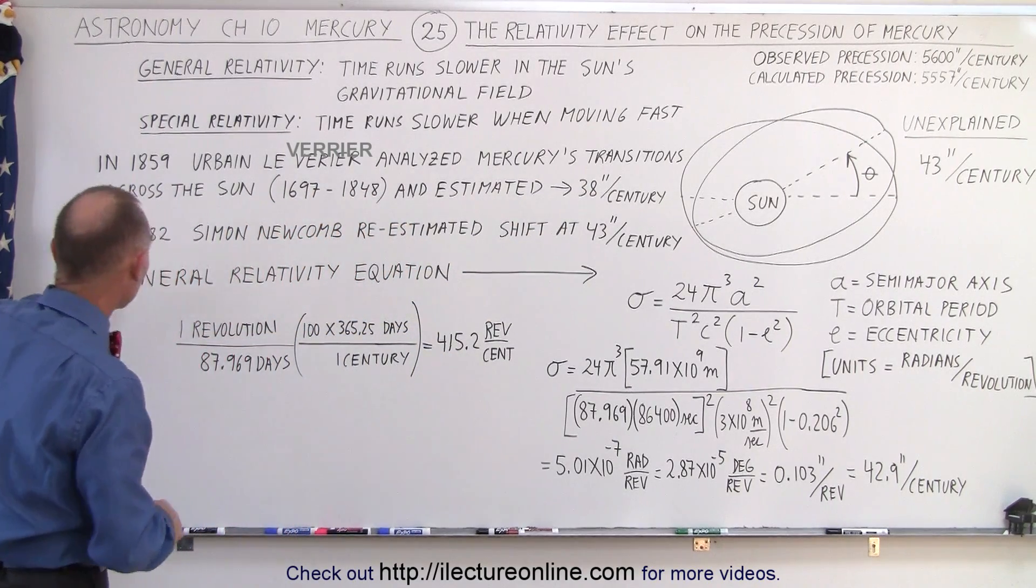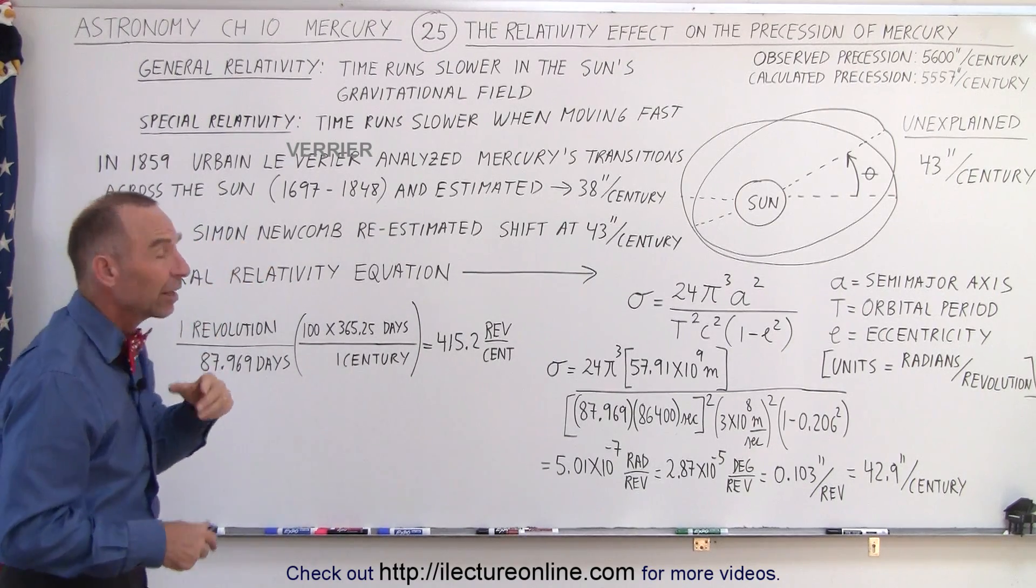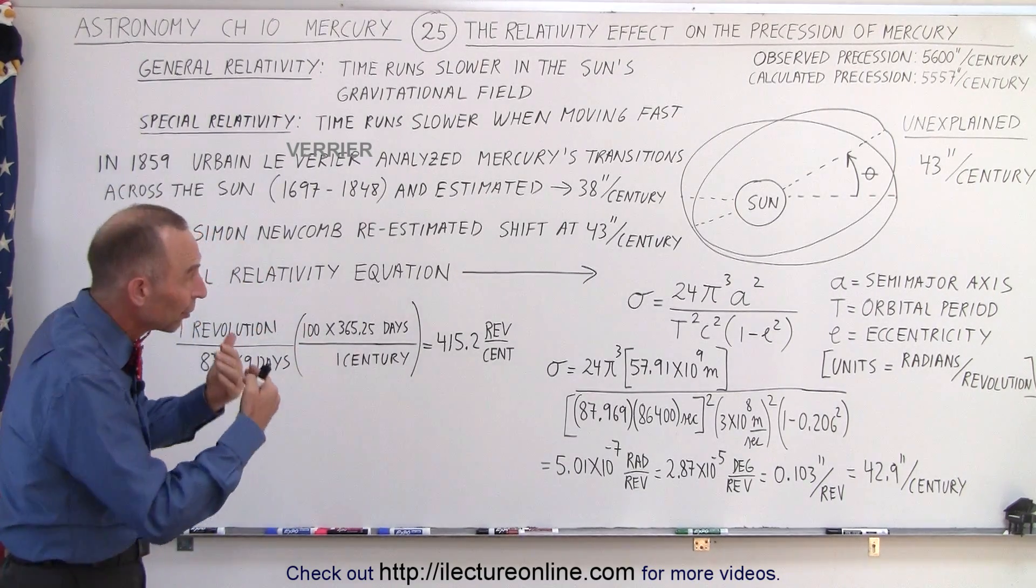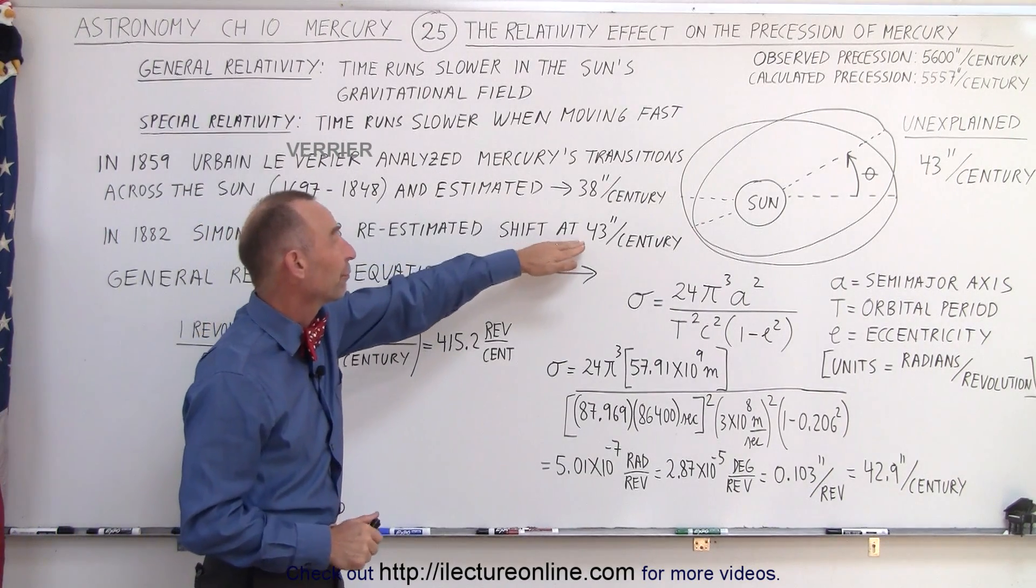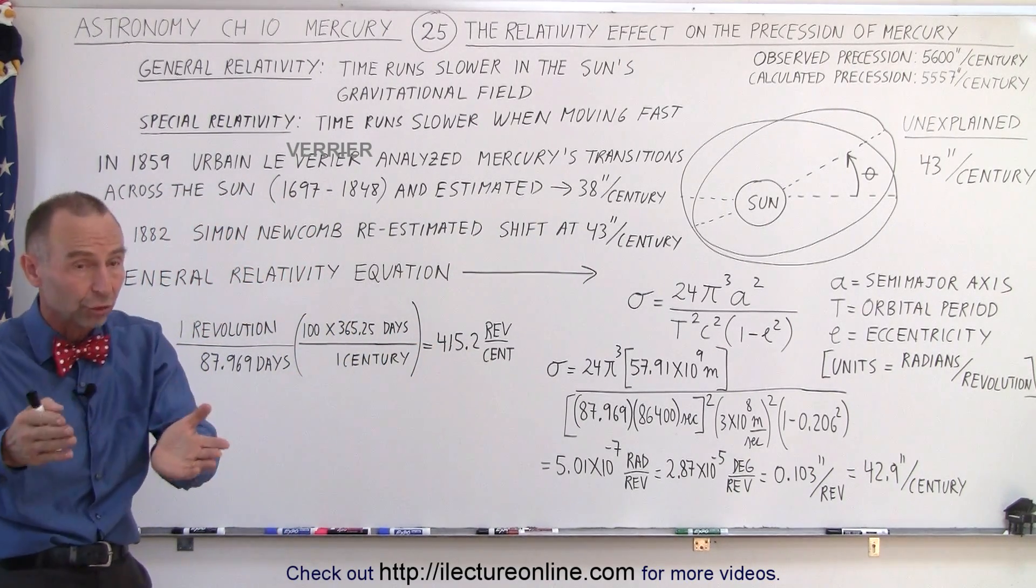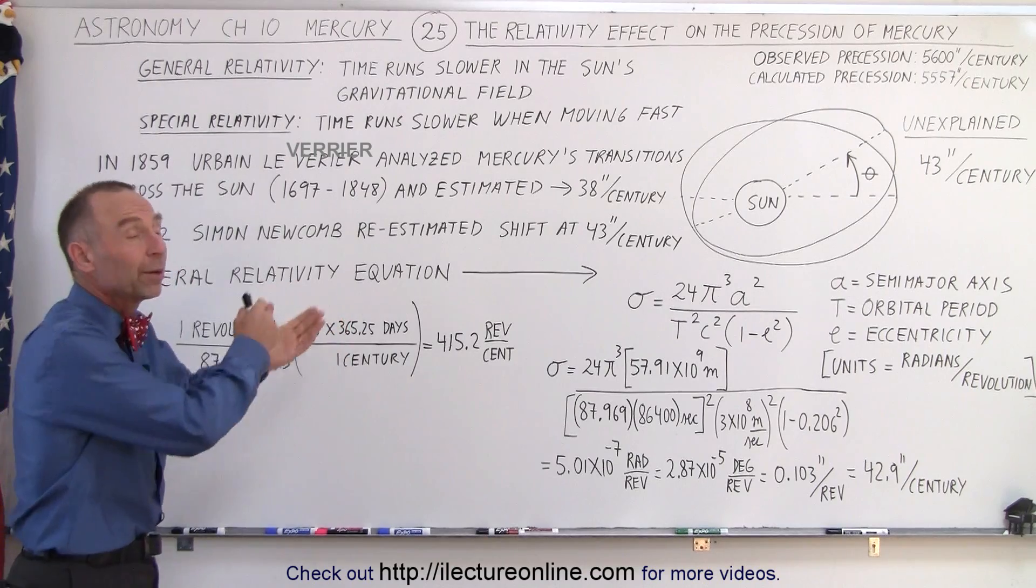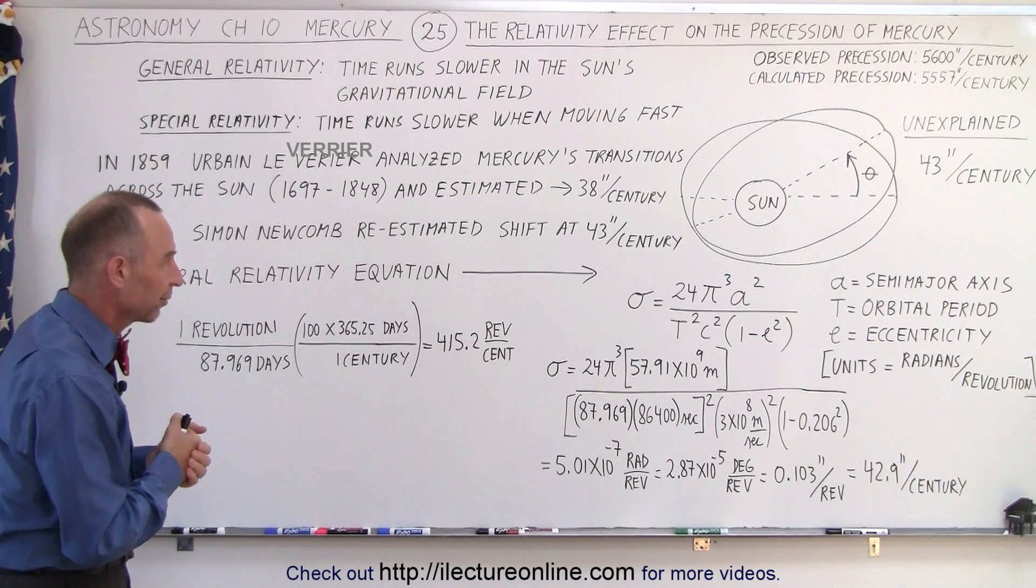Then a few decades later in 1882, Simon Newcomb re-estimated that shift, went through all the work again a little bit more accurately and he was able to come up with the difference of 43 arc seconds which is now the known quantity of the difference between what we actually observe and what we should be observing if of course there wasn't such a thing as the special and general theory of relativity.